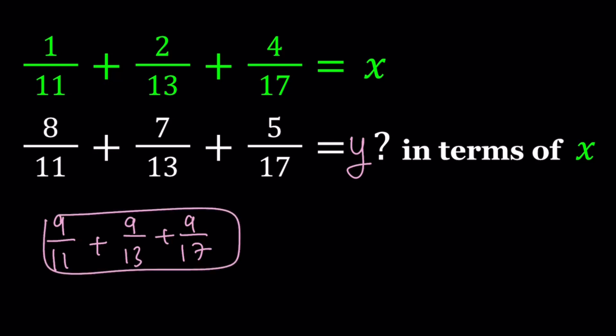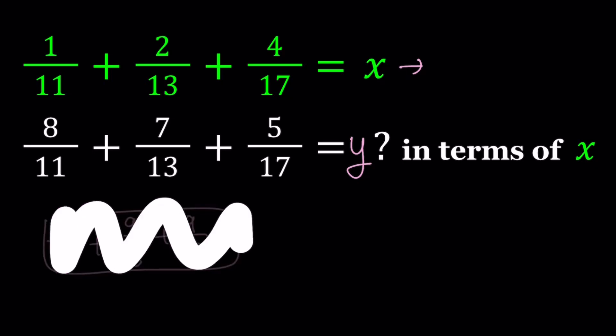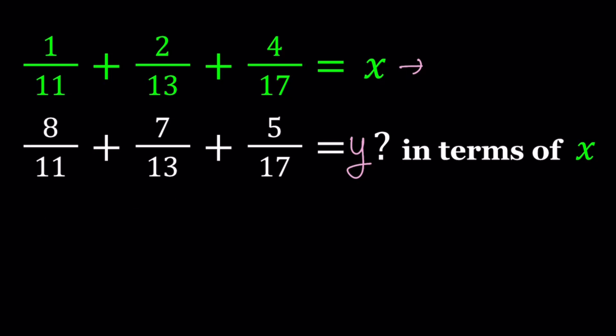Here's what we're going to do instead: we're going to take x and multiply by something, then add it to the second expression. Our goal is to find integers from that addition. I'm going to multiply the first expression — x — by 3.